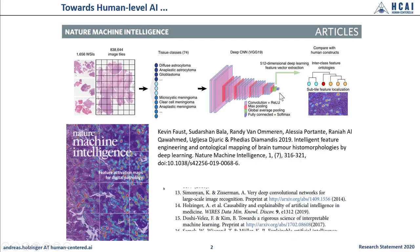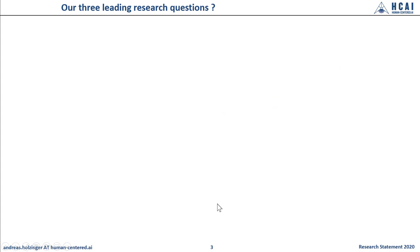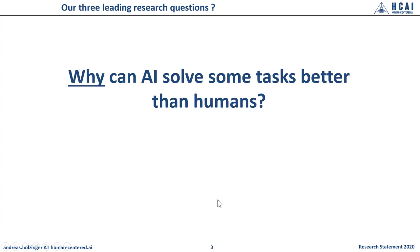Generally there is no doubt that AI has great potential for medicine, thanks to the great progress in statistical machine learning. So what is our story? What are the questions we are interested in? Together with my group I am interested in three questions. First: why can AI solve some tasks better than humans?